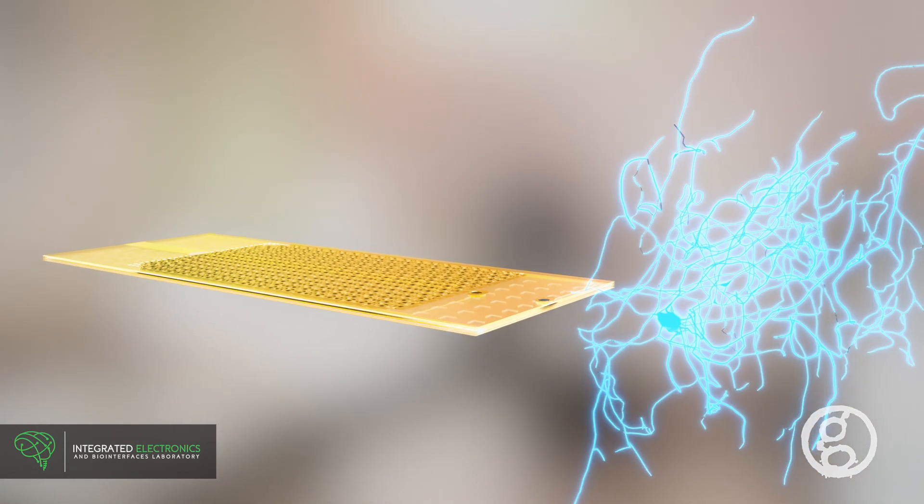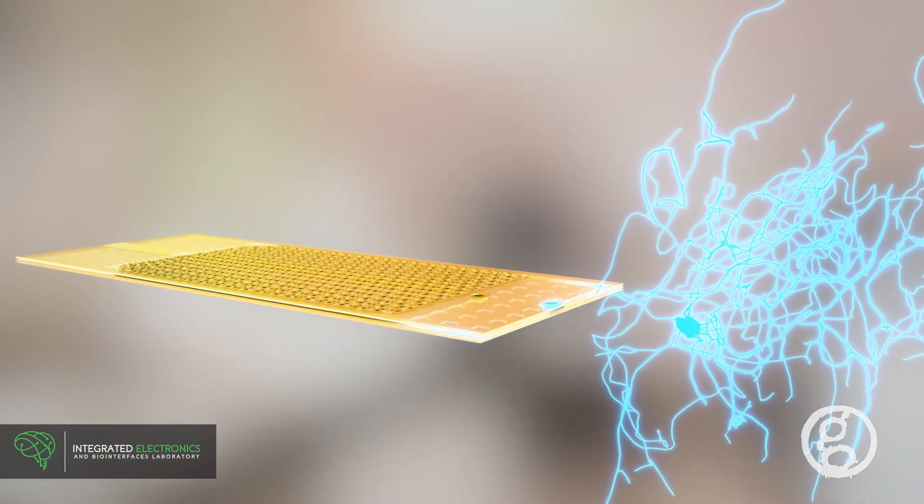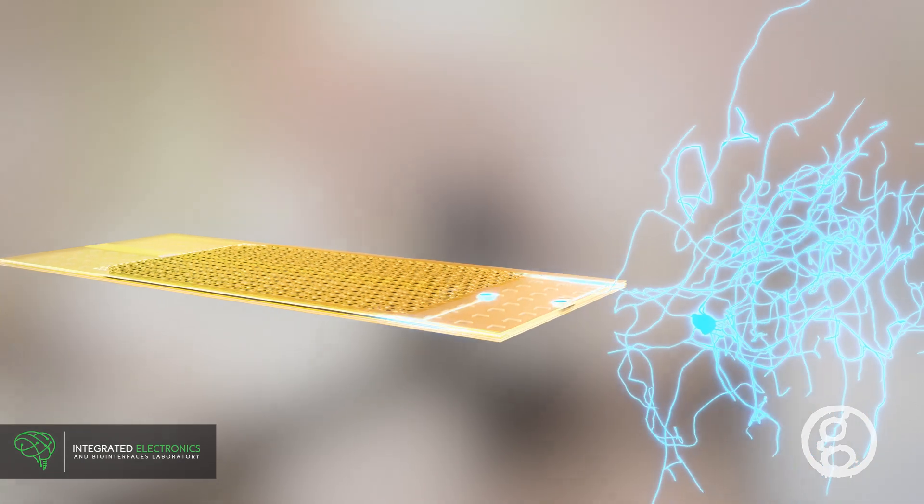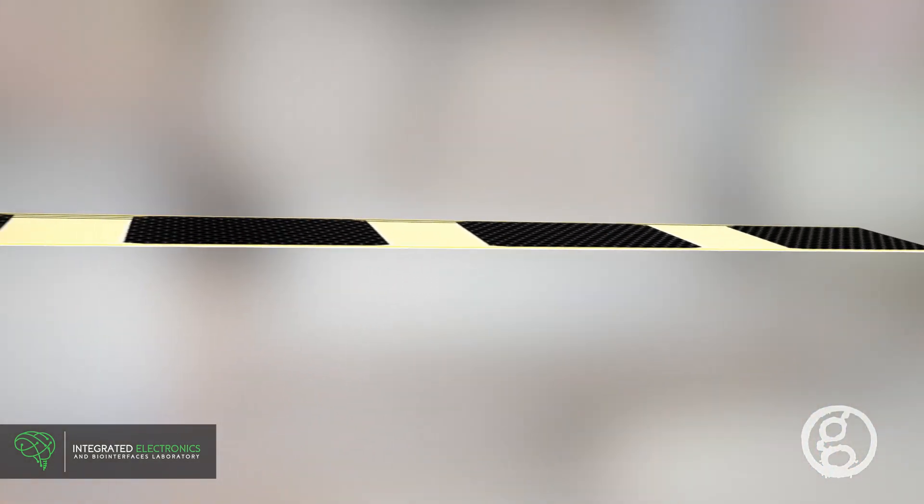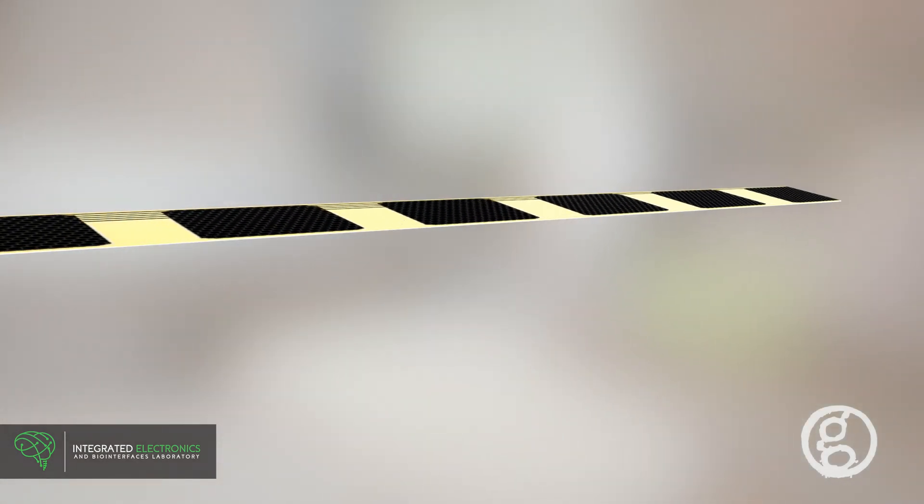The UCSD Micro-SEEG can record neuronal signals with microcontacts and stimulate neurons using macrocontacts with clinically acceptable levels. At over 10 cm long, the UCSD Micro-SEEG reaches deep brain structures.